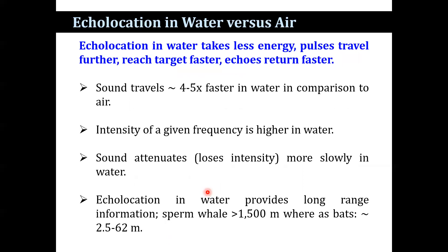Echolocation in water differs from echolocation in air. In water, echolocation takes less energy, pulses travel farther, reach the target faster, and echoes return faster. Sound travels 4 to 5 times faster in water than in air. The intensity of a given frequency is higher in water, and sound attenuates more slowly. Echolocation in water provides long-range information — in the sperm whale, the range is 1500 meters, whereas in bats it is restricted to only 2.5 to 62 meters.